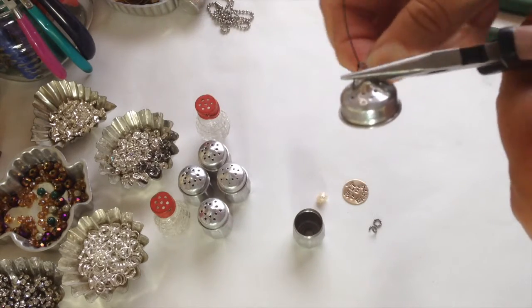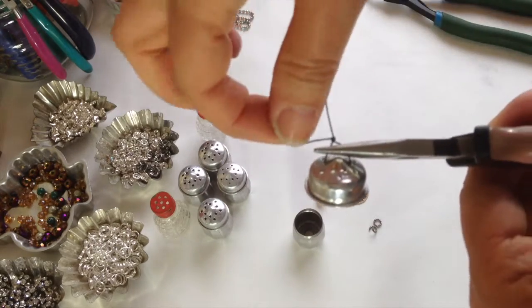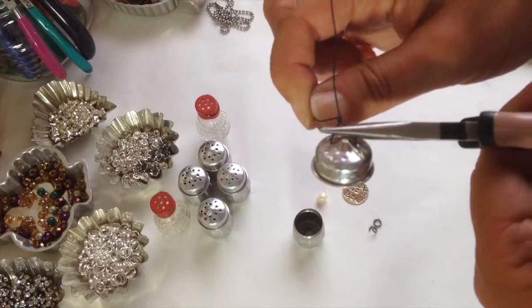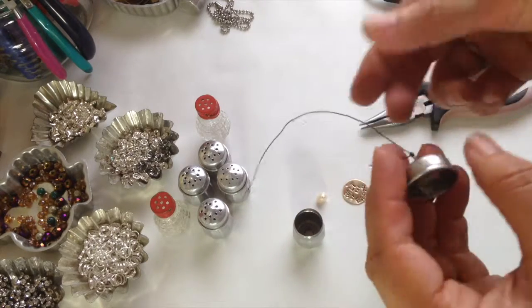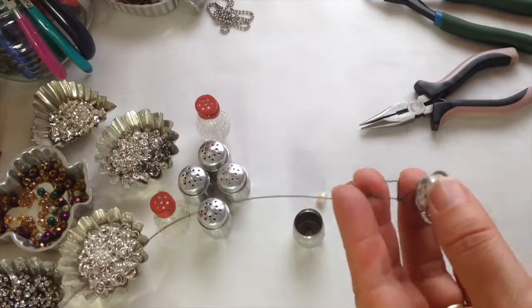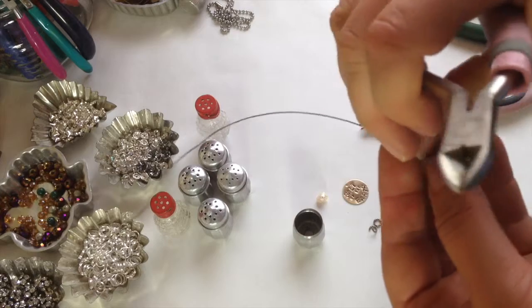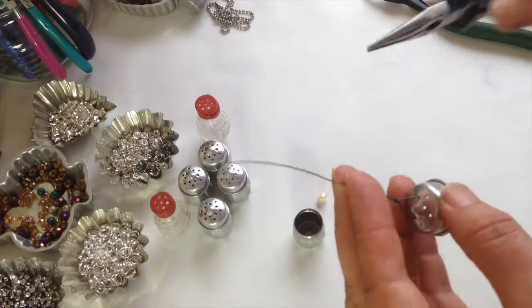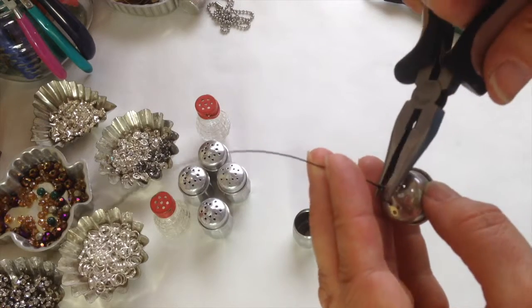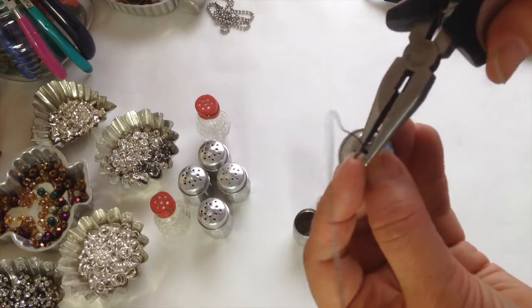And then I start turning that, and I make the short wire go around the long wire about three times. And I cut it with my wire cutters. Now I don't use my good wire cutters for this because this steel wire is kind of hard, and it will ruin those little jewelry wire cutters pretty quick. So I have an old pair that I use for this wire.